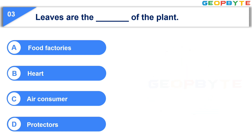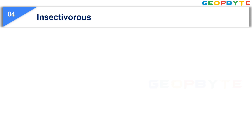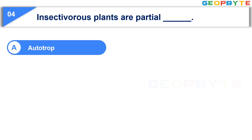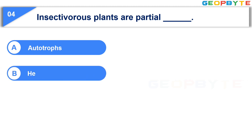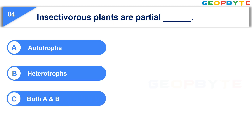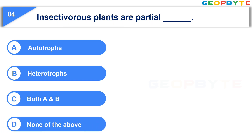Your time is up and the correct answer is Option A, Food Factories. Moving to the fifth question: Insectivorous plants are Partial dash. Option A: Autotropes. Option B: Heterotropes. Option C: Both A and B. Option D: None of the above. Your time starts now.